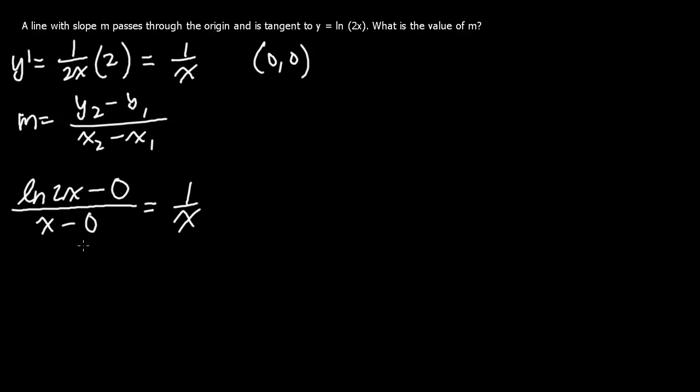What do we get? We should get ln 2x equals 1. And then we want to cancel this ln. So we bring in e to the ln 2x equals e to the first.